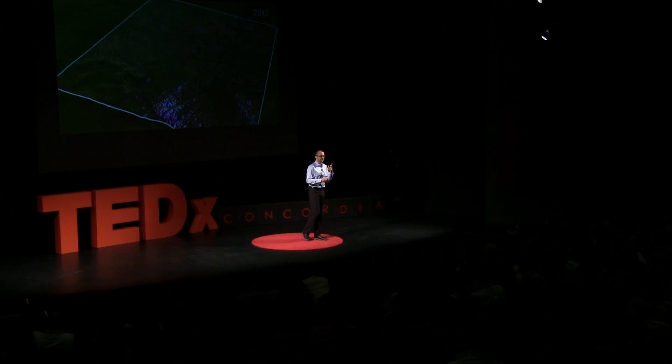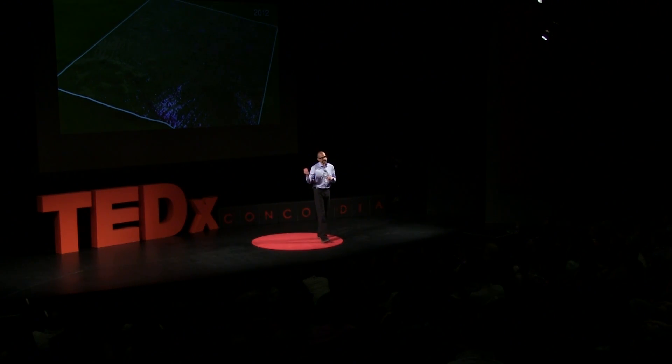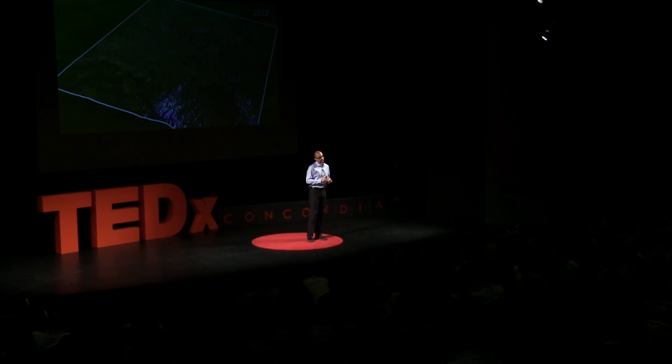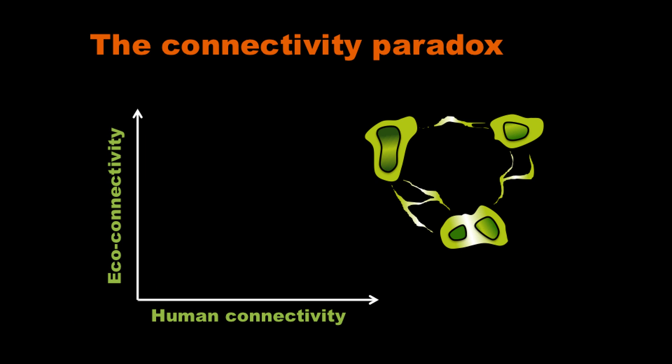So global fragmentation is here. It's widespread. It's happening in the boreal forest, it's happening in the tropics, it's happening in Southeast Asia, Africa and South America. This disconnection of nature is a real phenomenon that opposes human connectivity. This opposition — this antagonism between human connectivity and nature's connectivity — is what I call the connectivity paradox.